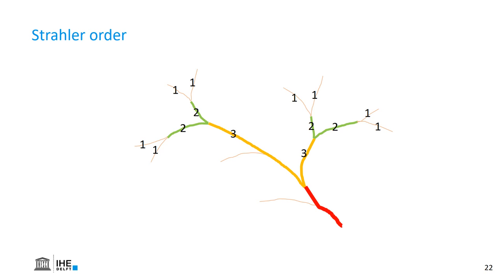However, when a lower order joins a higher order, the order is not changed — so here it remains 3. Then two of order 3 become order 4. And when we have order 1 joining again, it stays order 4. Based on this ordering, we can determine a threshold value for which we consider the reaches as being part of a river — for example, all orders larger than 3. To determine this threshold, we need to do a calibration using a satellite image or an existing map to see which threshold value fits best with the knowledge we have of the area.